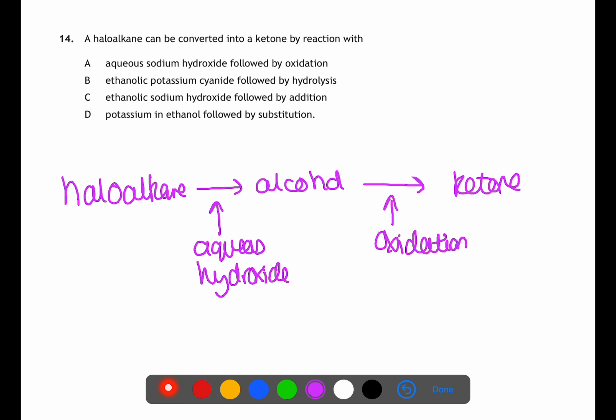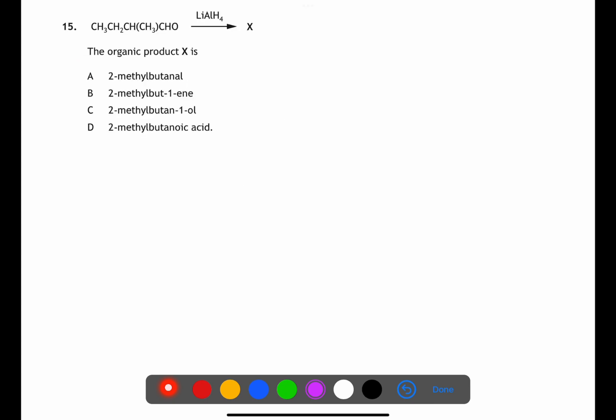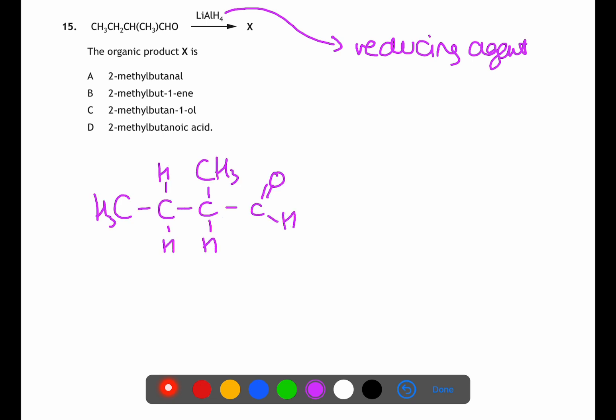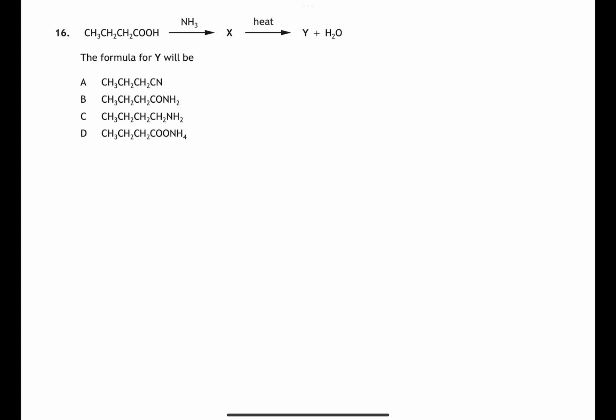Question 15 is looking at synthesis again. We're using lithium aluminium hydride which is a reducing agent. Let's start by drawing out the organic molecule which we've been given. This molecule is 2-methylbutanal. To reduce the 2-methylbutanal we will reduce the carbonyl group back to a hydroxyl group. This will produce 2-methylbutanol.